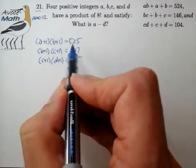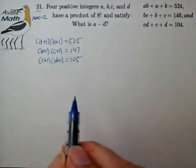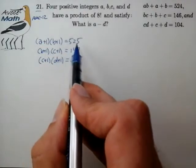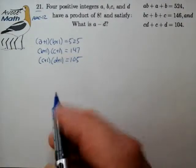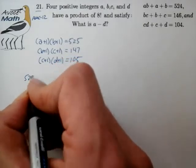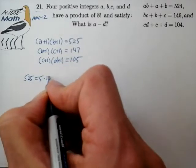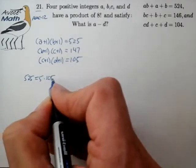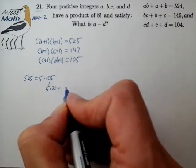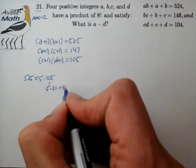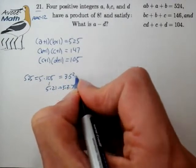At this point in our procedure for solving these factorable equations, we always want to reduce any numbers into prime factorization form. So 525: divide by 5, that's 5 times 105; divide by 5 again, that's 5 times 21; and 21 is 3 times 7. So altogether 525 equals 3 times 5 squared times 7.